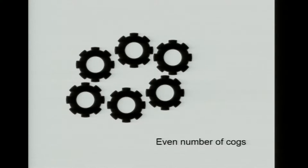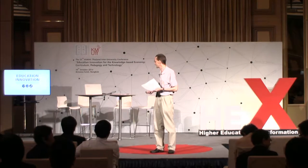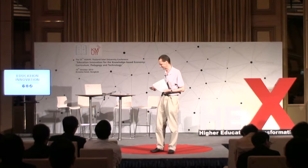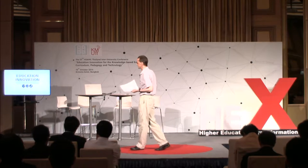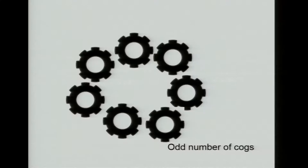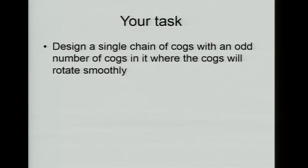Here we have an even number of cogs — six cogs. When cogs rotate, one rotates clockwise, and the one next to it rotates anticlockwise, so they all happily rotate. But when we have an odd number of cogs — seven here — they can't rotate, because two of them are trying to go in the same direction. So I'd like you to try to think about how to make a single chain of cogs with an odd number of cogs in it which will rotate.